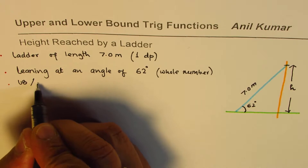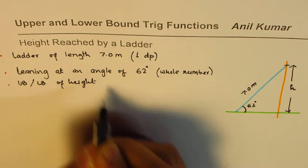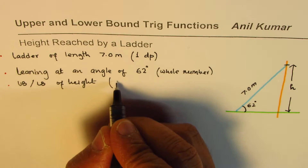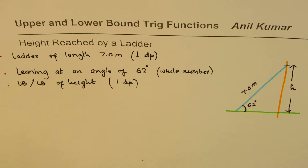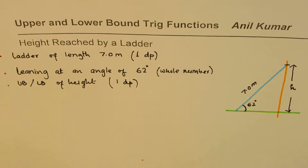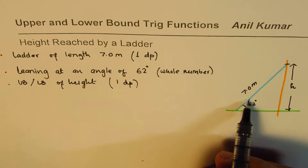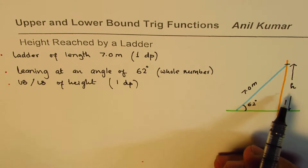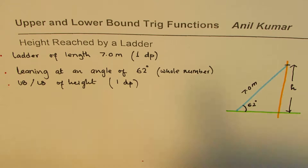We need to find the upper bound and lower bound of the height and we'll round our answers to one decimal place. An important concept: if the angle increases then the height increases, and if the angle decreases the height decreases.